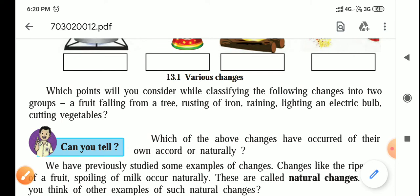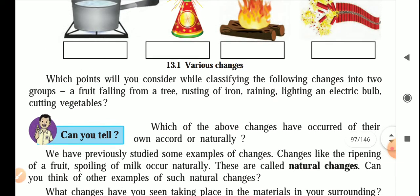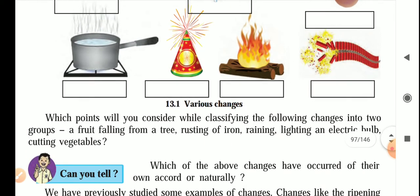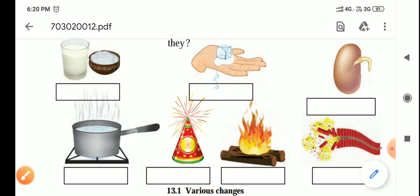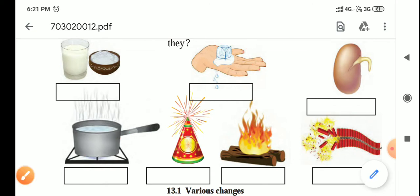Some of these changes are happening naturally, while for some changes you might have to act on your own. Changes which occur naturally include the sprouting of a bean — this is happening naturally. The melting of an ice cube is also happening naturally. However, boiling of water requires effort — you have to put the pan on the gas stove and then the water will be boiled.